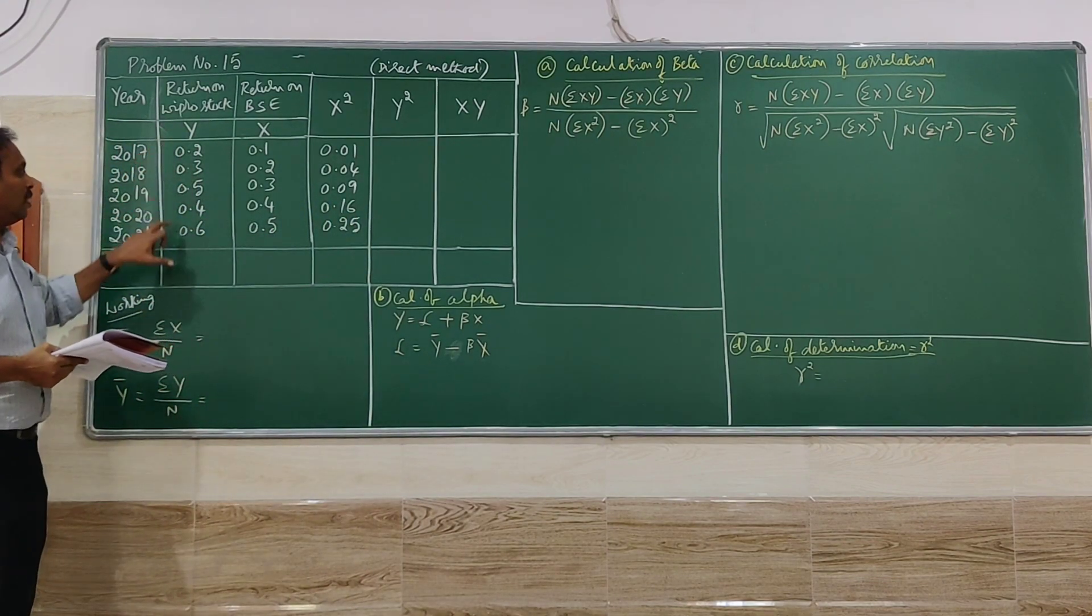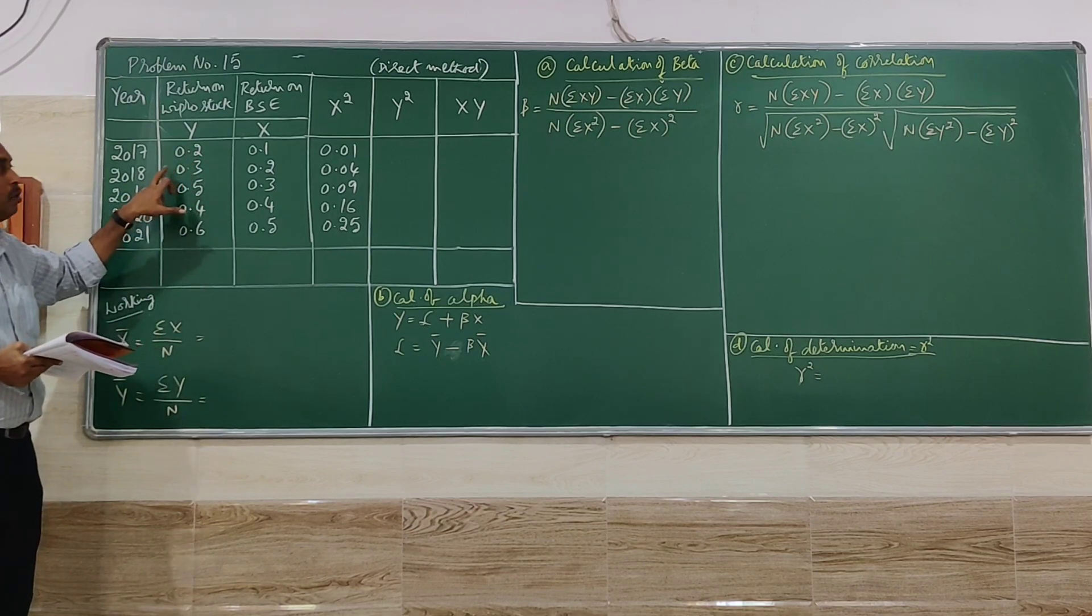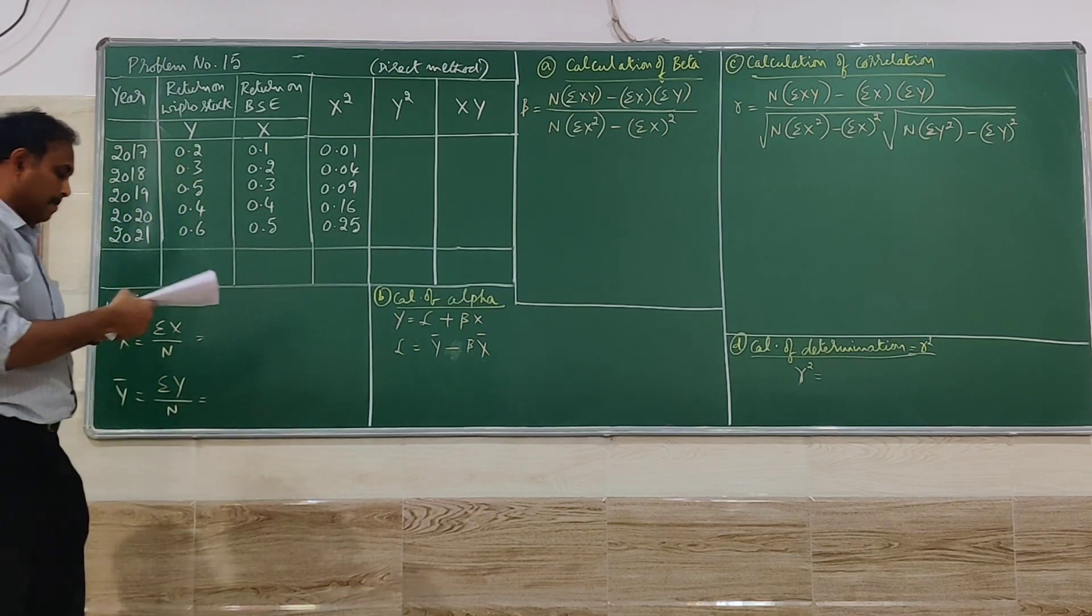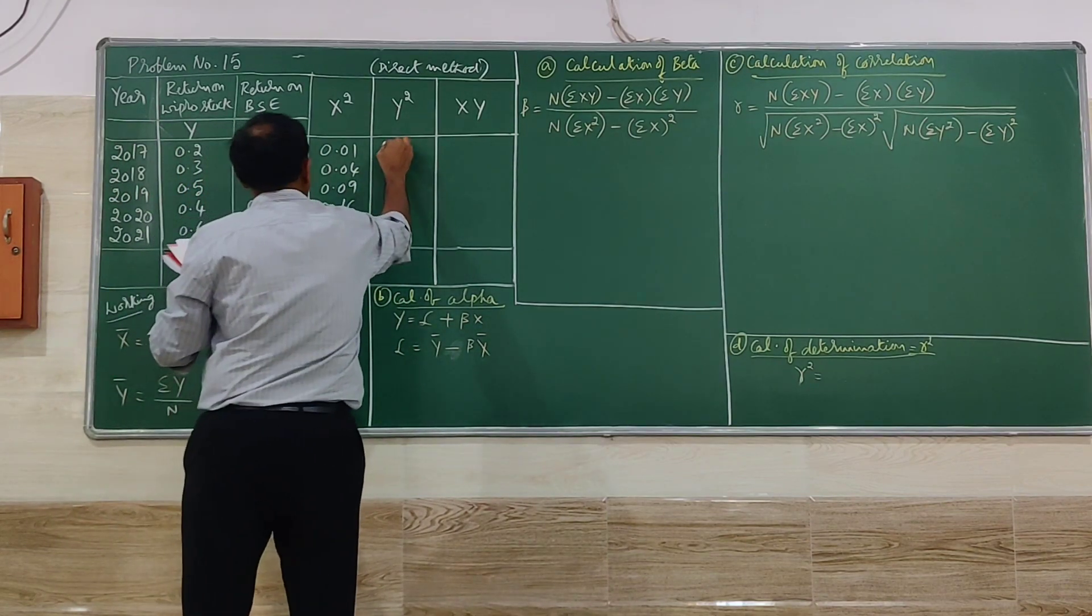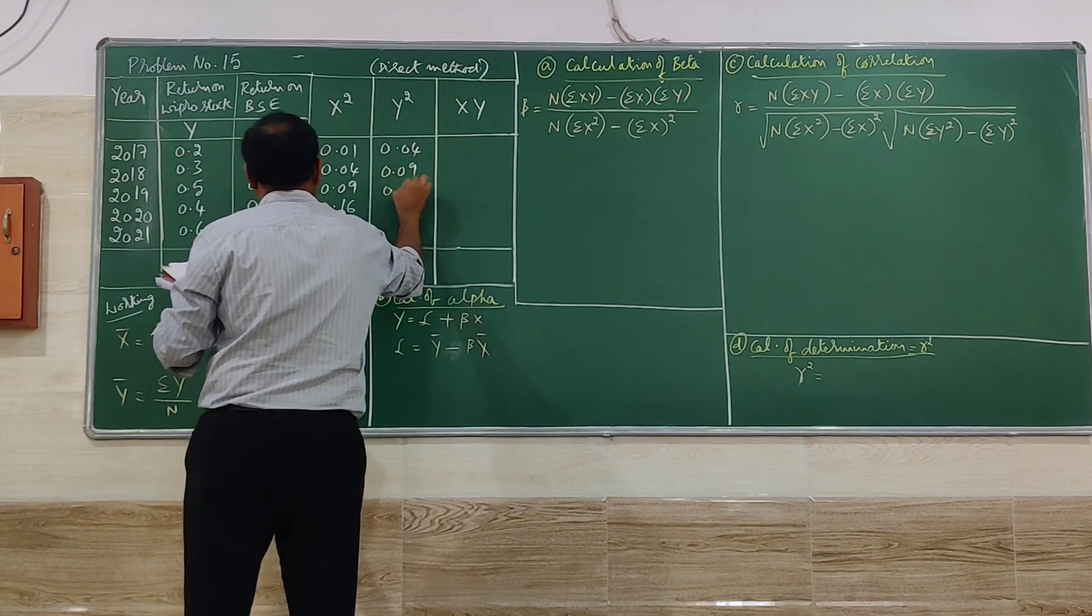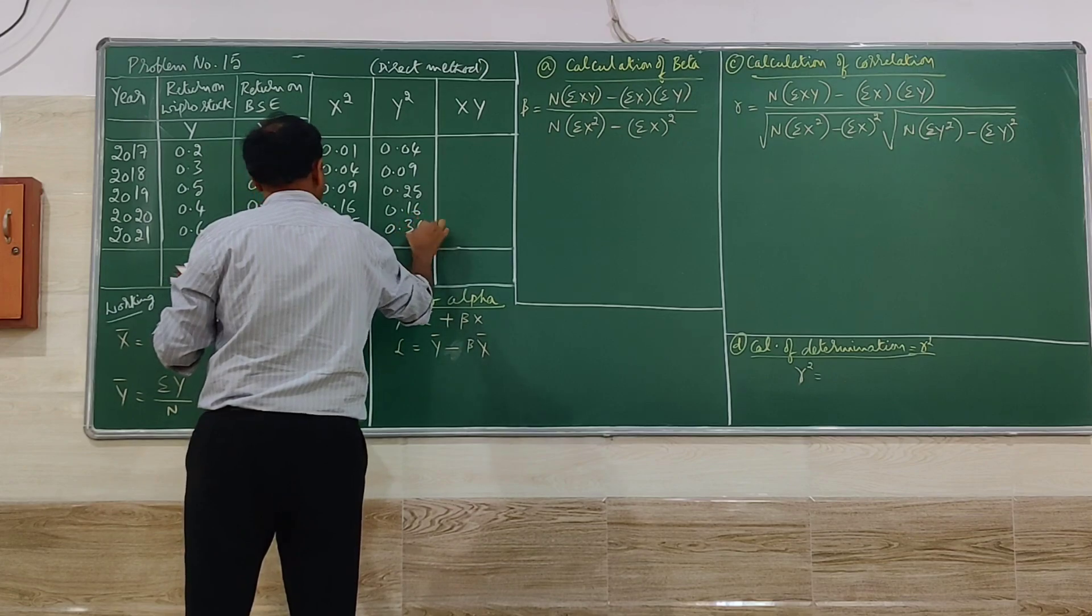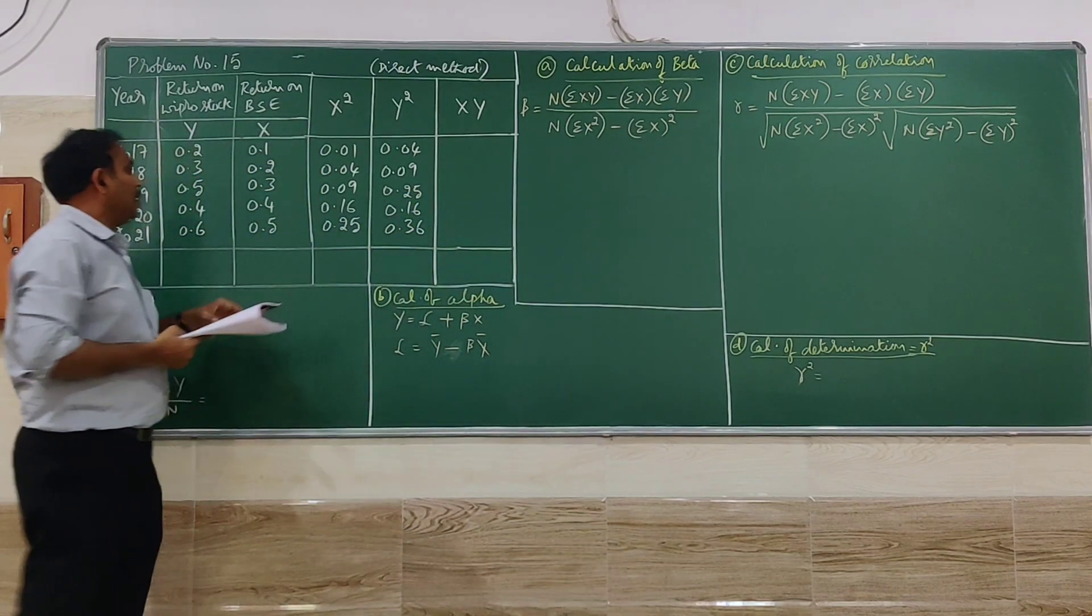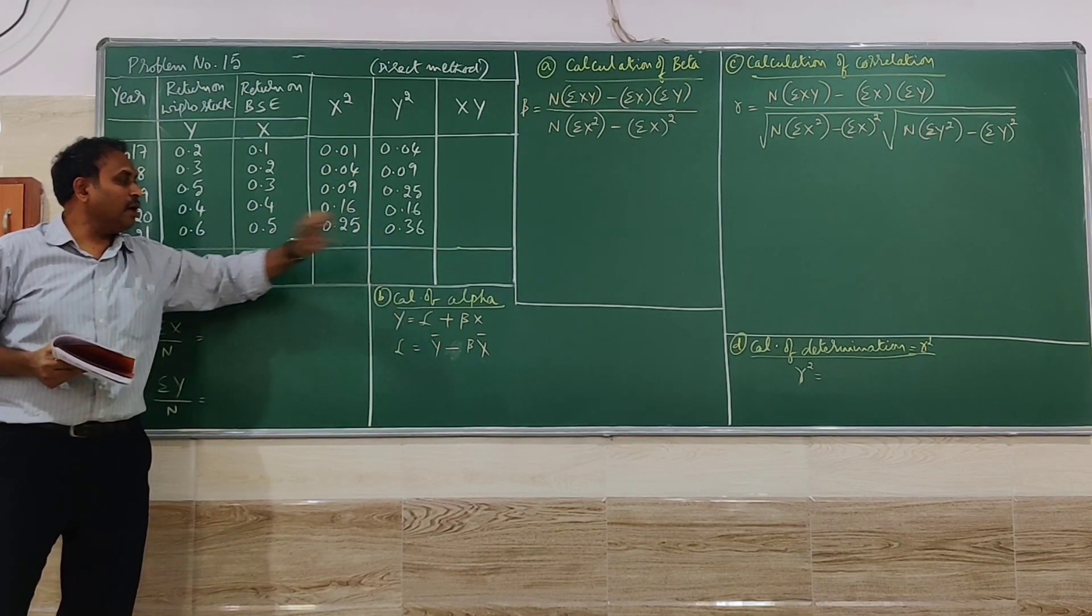Then we have to go for squaring the Y values 0.2 into 0.2, 0.3 into 0.3 like that. After this particular case, we have to go for squaring the Y values. So squaring all Y values, you are going to get these values over here.